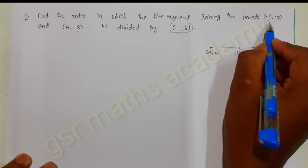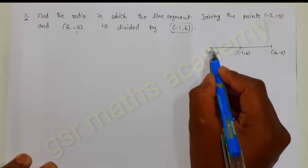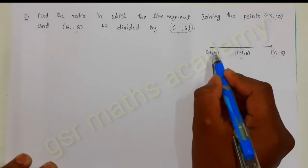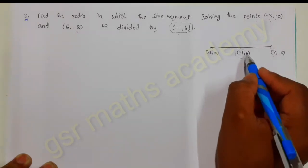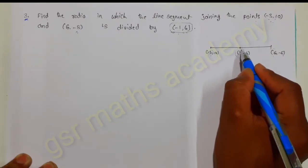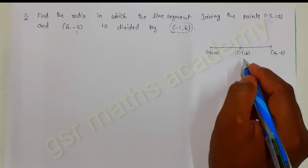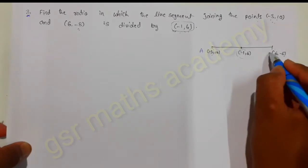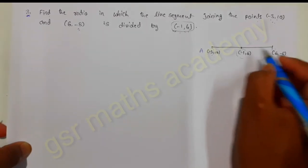If you join the two points minus 3 comma 10 and 6 comma minus 8, you will get a line segment. On this line segment, if you take minus 1 comma 6 as a point, we need to find in which ratio this point divides the line segment. Let us suppose the given points as A equals minus 3 comma 10 and B equals 6 comma minus 8.